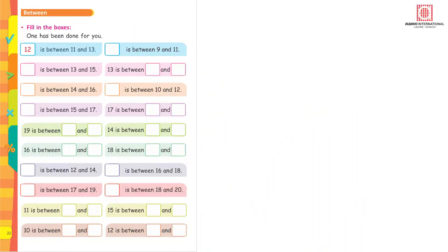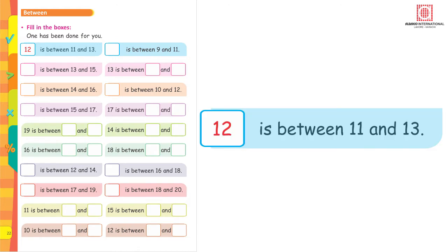Now try it yourselves. Move on to page 22. In the previous page we did a number before and the number after the given number. Now we are going to do the number between the two numbers. Between means in the center. The first one has been done for you. 12 is between which two numbers? 11, 12, 13. So 12 is between 11 and 13.